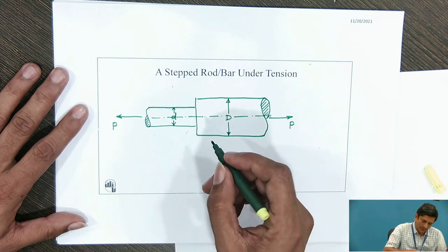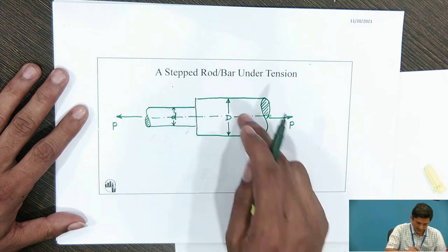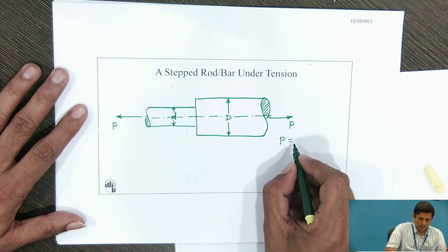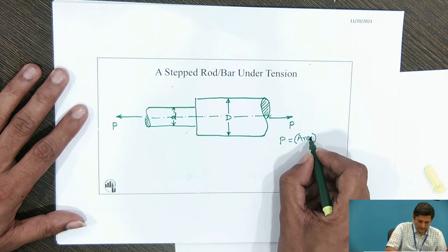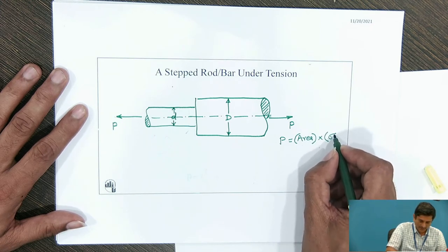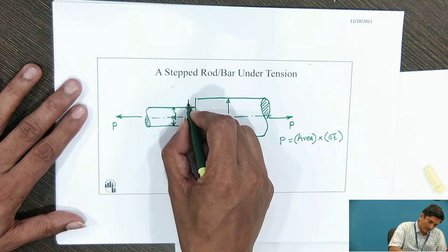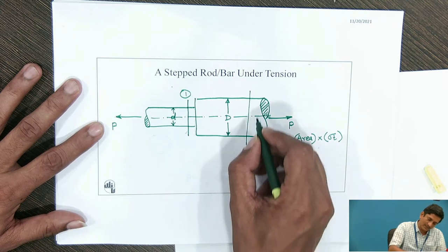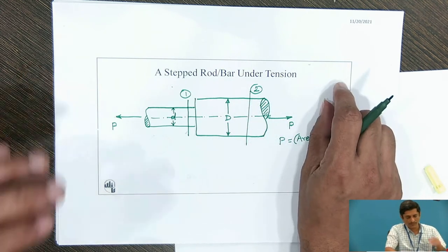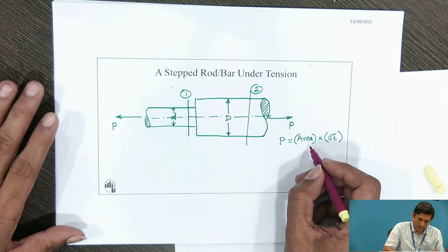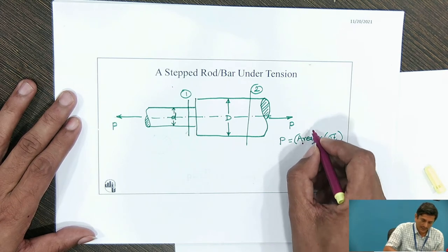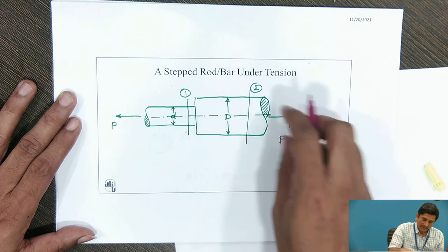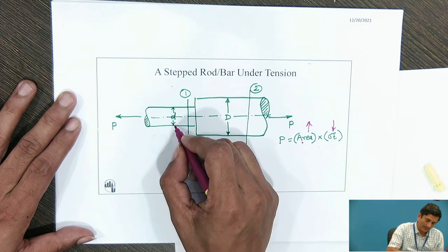One may need to think about which location the component will fail. You can check our regular equation: force P equals area resisting the failure multiplied by the corresponding stress — here it is sigma t. There can be two locations: either the component will fail at the smaller section or at the larger diameter. However, if area increases, the stress decreases. Therefore, at the larger area the stress will definitely be less.